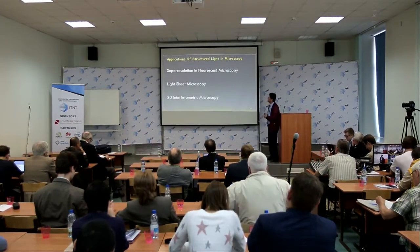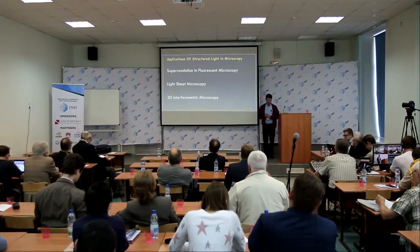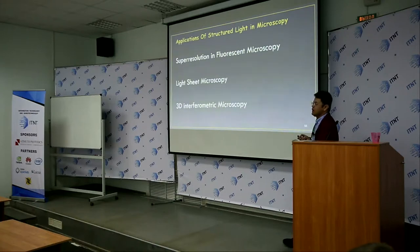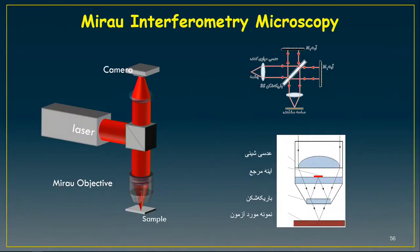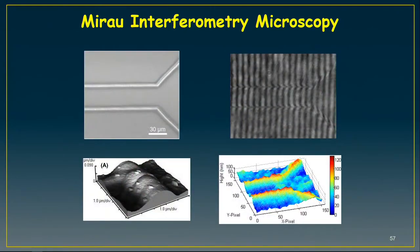The last thing I want to talk about — one of the most important applications of structured light — is in optical microscopy: super-resolution in fluorescence microscopy, light-sheet microscopy, and 3D interferometric microscopy. Fabrication of very narrow structured light is applicable in these three fields. This is a setup which we have in our laboratory for Mach-Zehnder interferometric analysis. These are micro-channels which we have prepared in our laboratory, and we can analyze the micro-channels using 3D interferometric microscopy imaging.